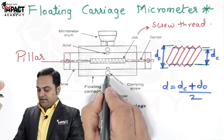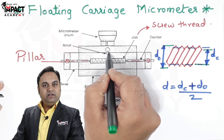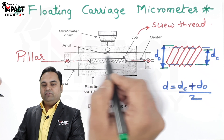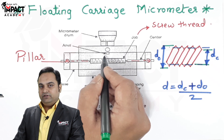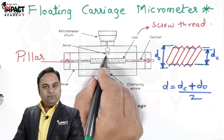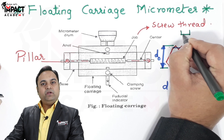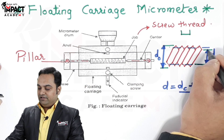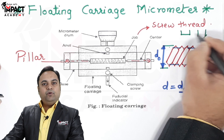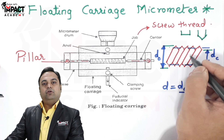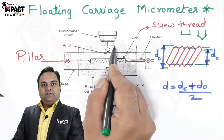There is also a clamping screw. The micrometer consists of an anvil, and the anvil shape can be different depending on what we are measuring. If we are measuring the outer diameter (DO), the anvil would be flat or cylindrical. But if we want to measure the internal or core diameter (DC), the shape of the anvil is pointed. The type of anvil shape depends upon which diameter we are measuring, and the reading is indicated on the micrometer drum.